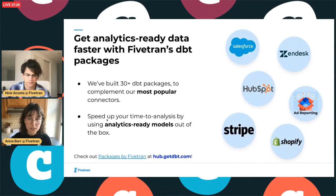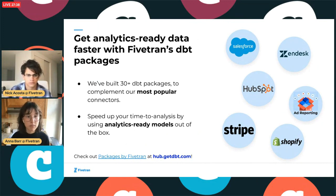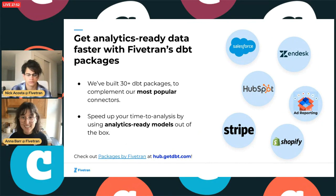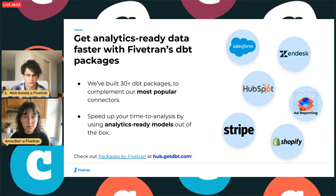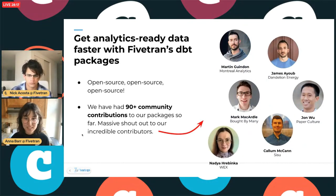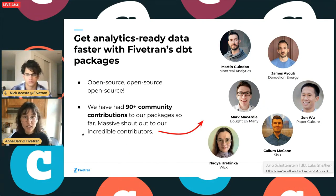Next, we have our dbt packages. We've been building these over the last 12 months, designed specifically for our Fivetran connector schemas but available to anyone who uses dbt. These packages contain common models for our most popular sources — sales reports from Stripe and Shopify, financial summaries from NetSuite, and ticket movement analysis from Zendesk and Jira — allowing you to get started analyzing that data much faster. We've seen this cut down the time to get set up with dbt enormously. Huge shout out to our 90-something contributors who've helped us develop these packages.